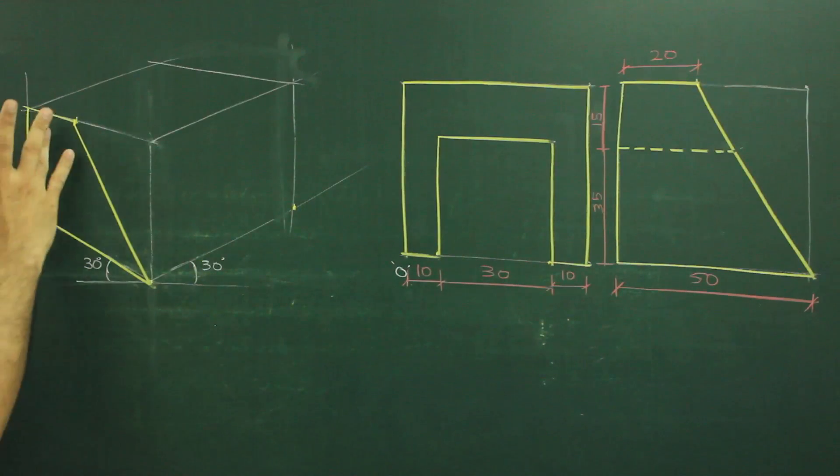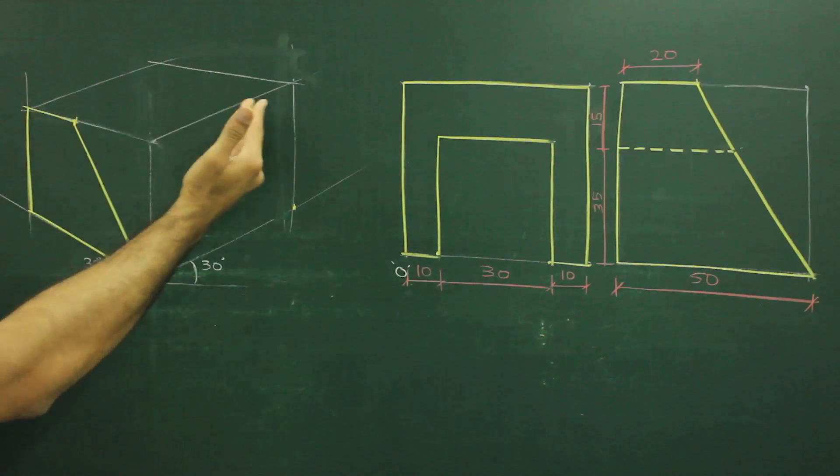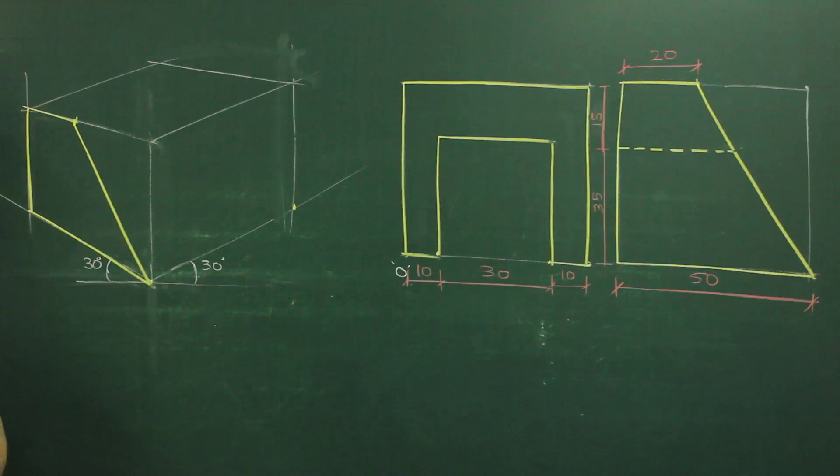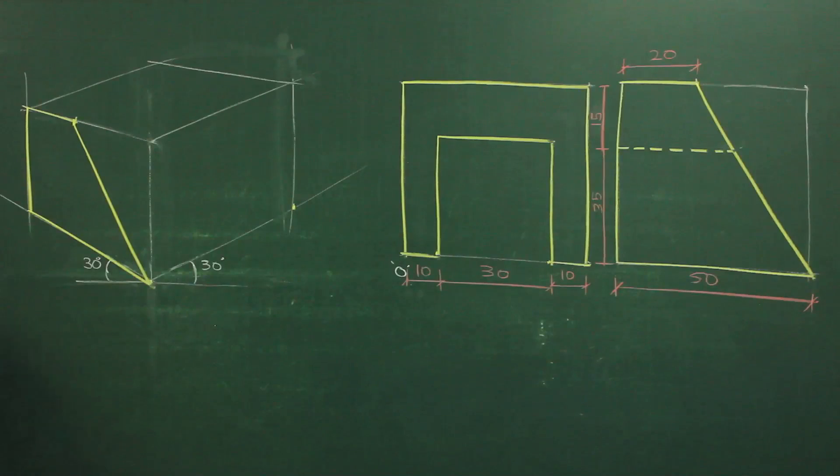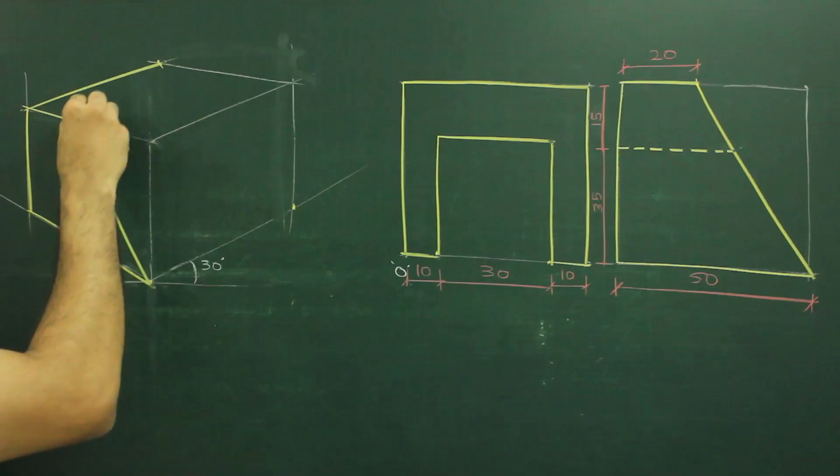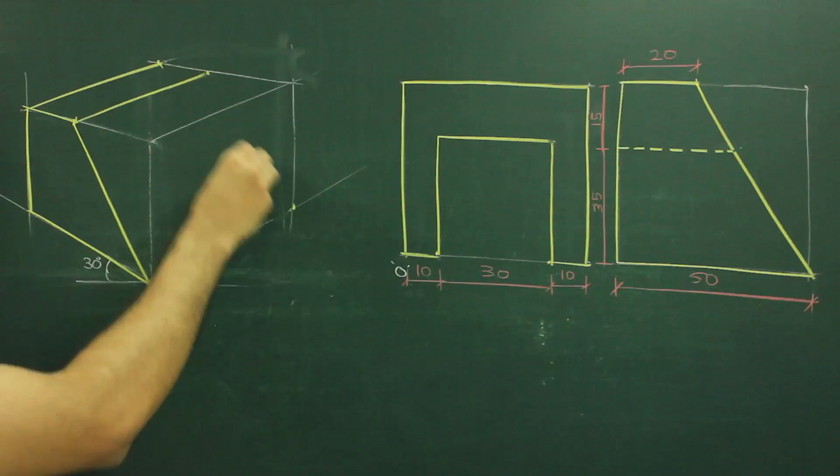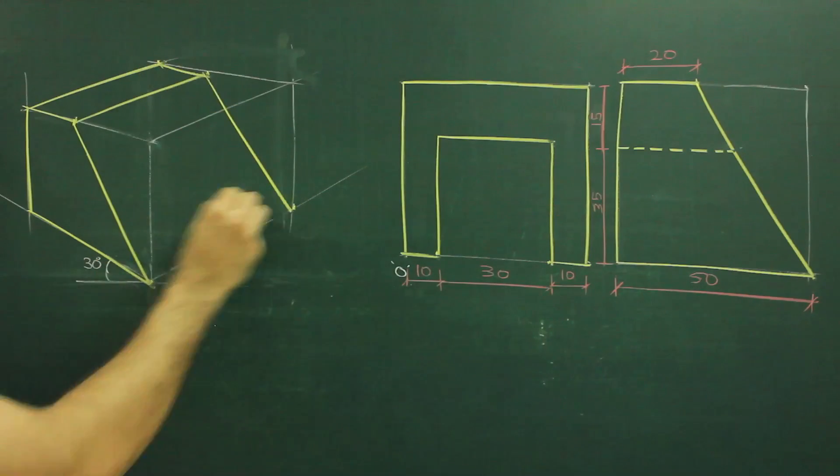Then in isometric, we know that whatever is there on one side, the same thing is on the other side. If you see width wise, it is 10, 30, 10, 50. So we will go behind by 50, again here also 50, and we can join those. So we got this part.